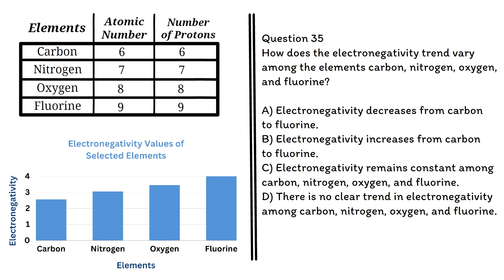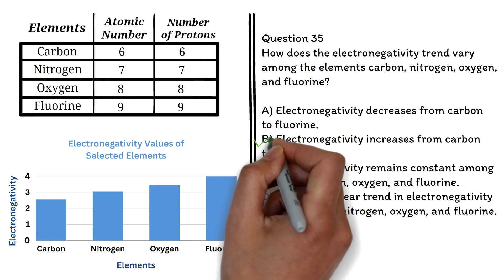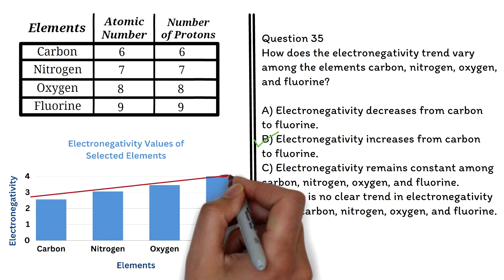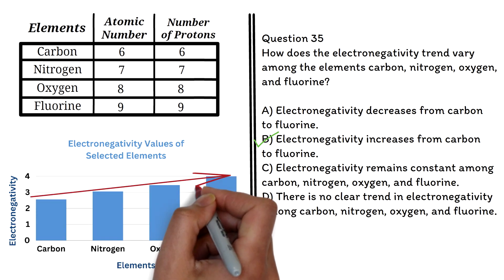d. There is no clear trend in electronegativity among carbon, nitrogen, oxygen, and fluorine. The correct answer is b: electronegativity increases from carbon to fluorine. We can see from the graph that the electronegativity values are increasing as you move from carbon to fluorine.